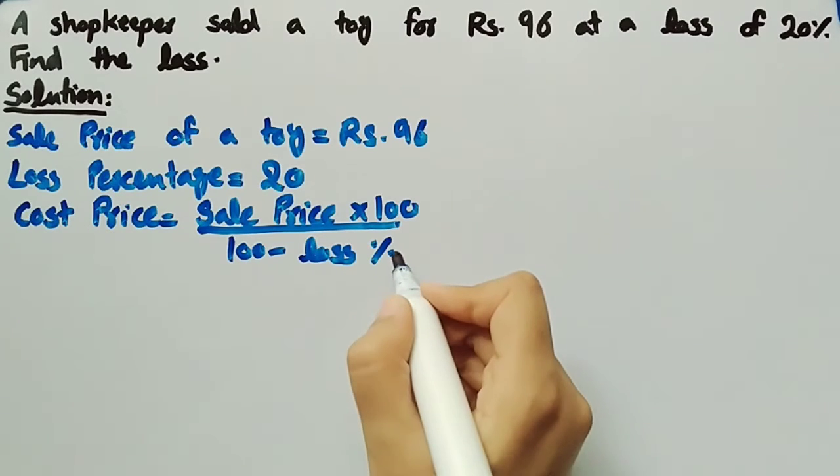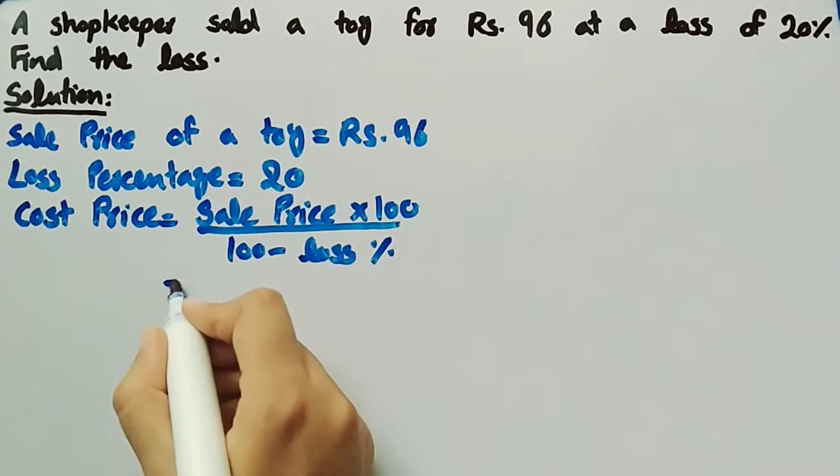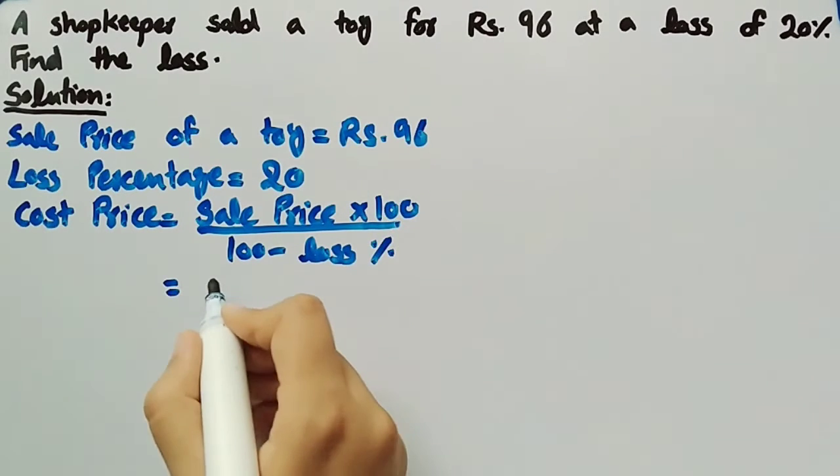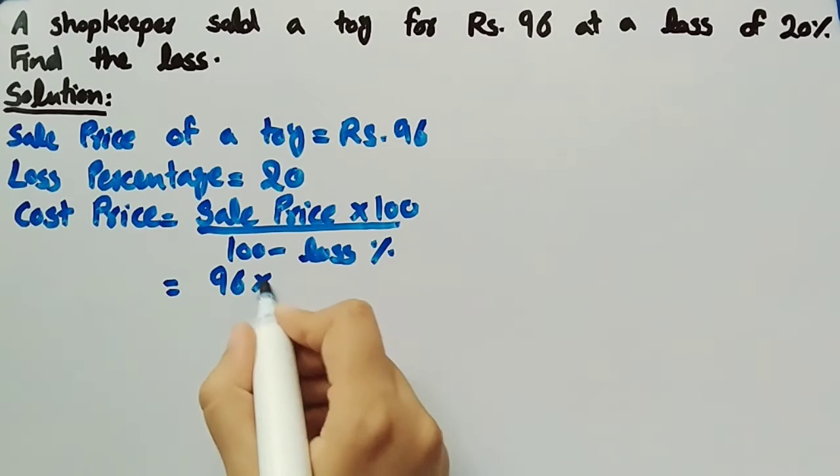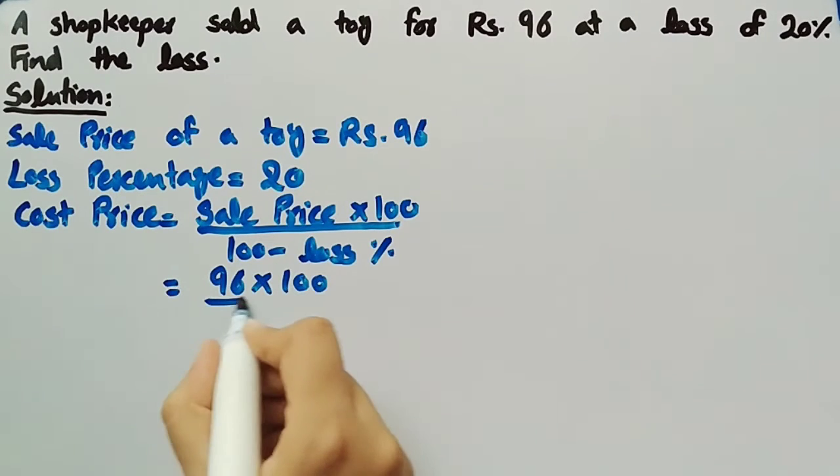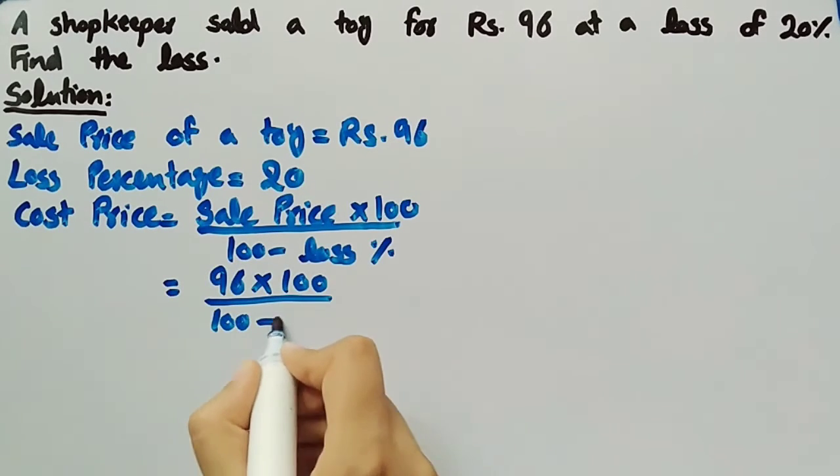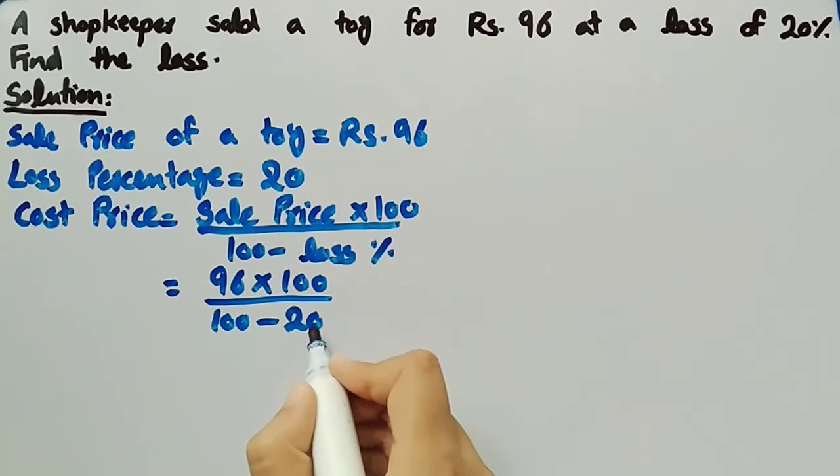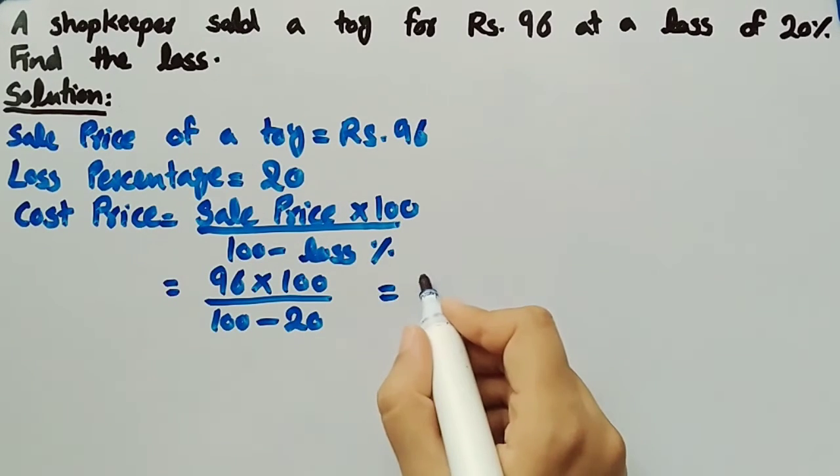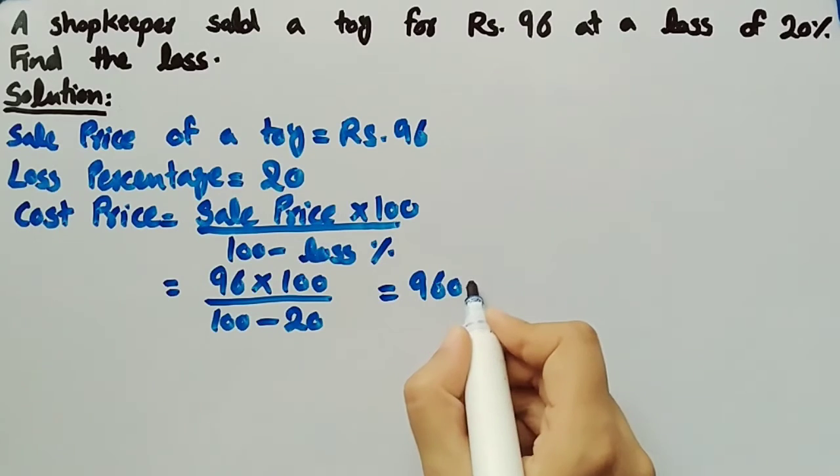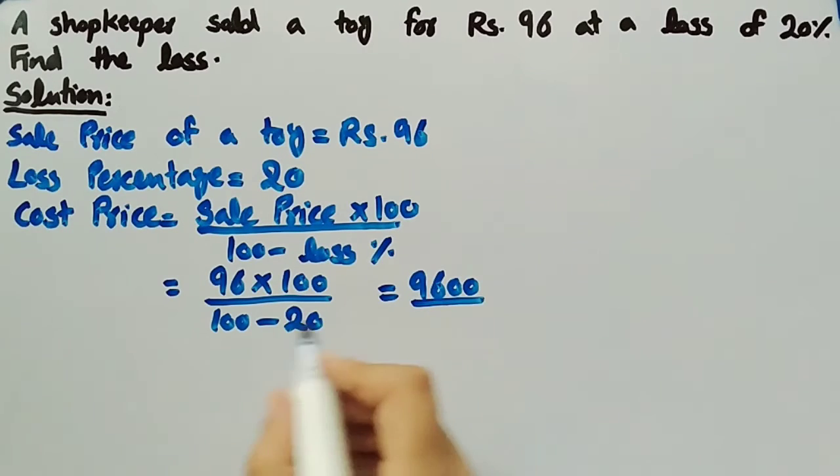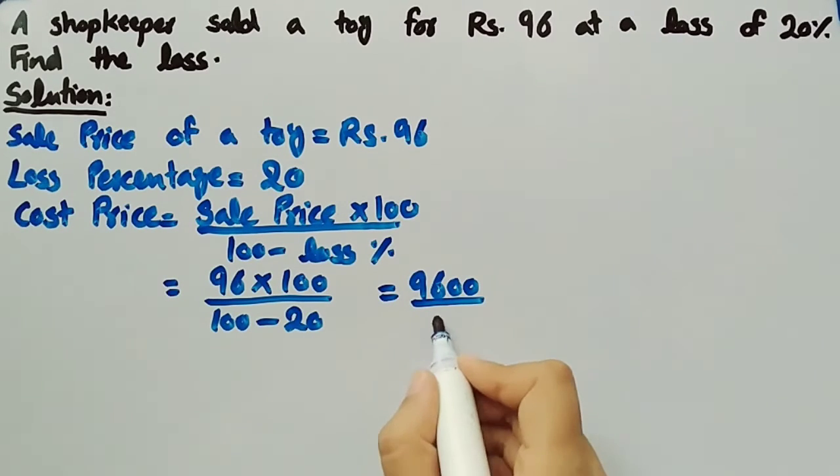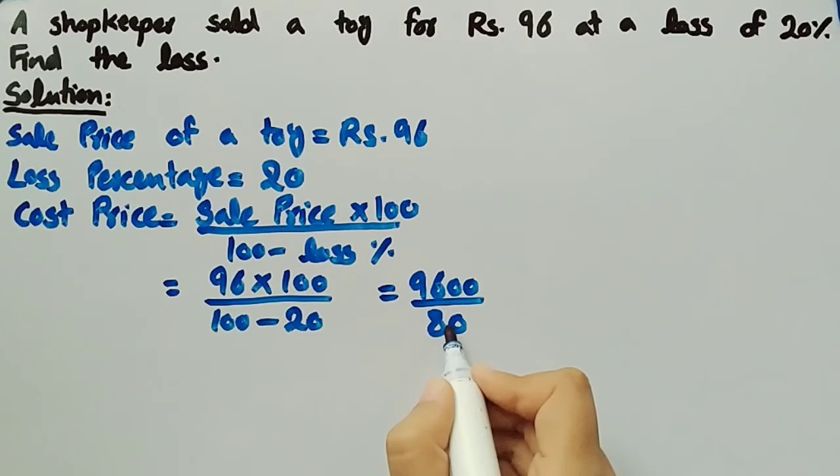Now we will substitute the given values. Sale price is rupees 96 multiplied by 100 divided by 100 minus loss percentage which is 20. 96 multiplied by 100 is 9600 divided by 100 minus 20 is 80.